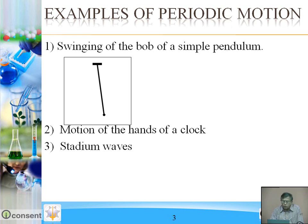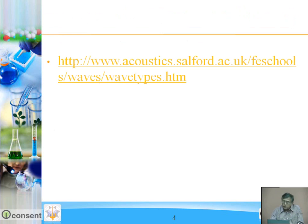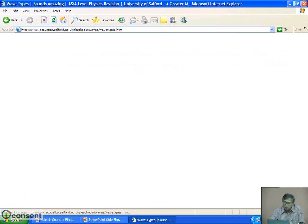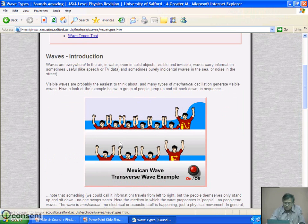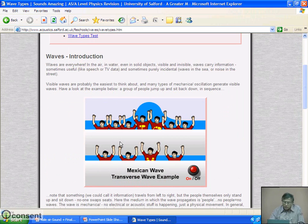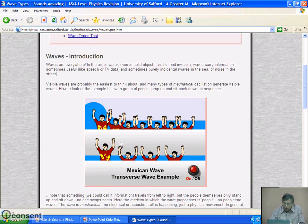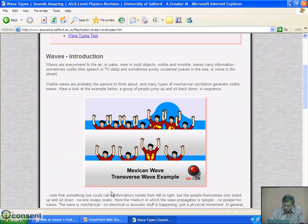These are the examples of periodic motion: swinging of the bob of a simple pendulum, motion of the hands of a clock that you must have observed, and stadium waves. Let us see these stadium waves — a very interesting picture of the stadium waves.